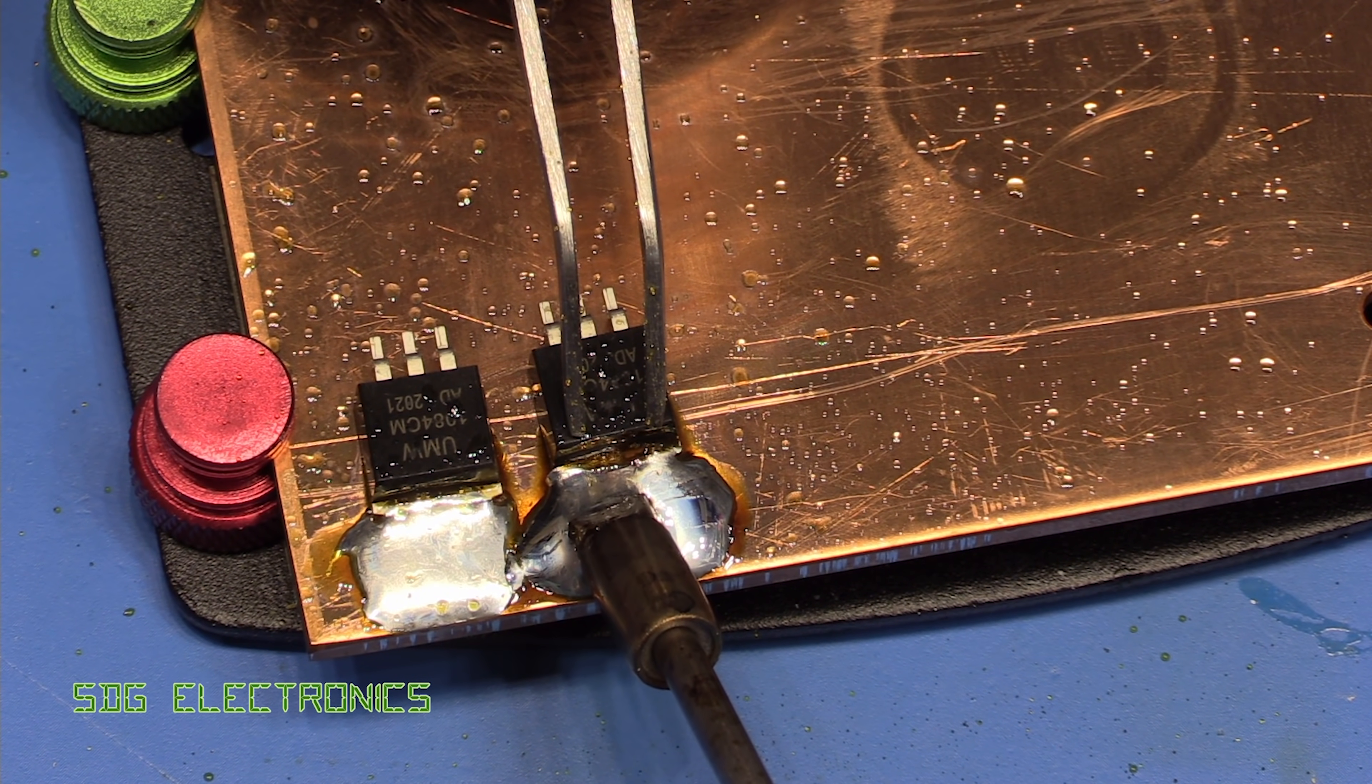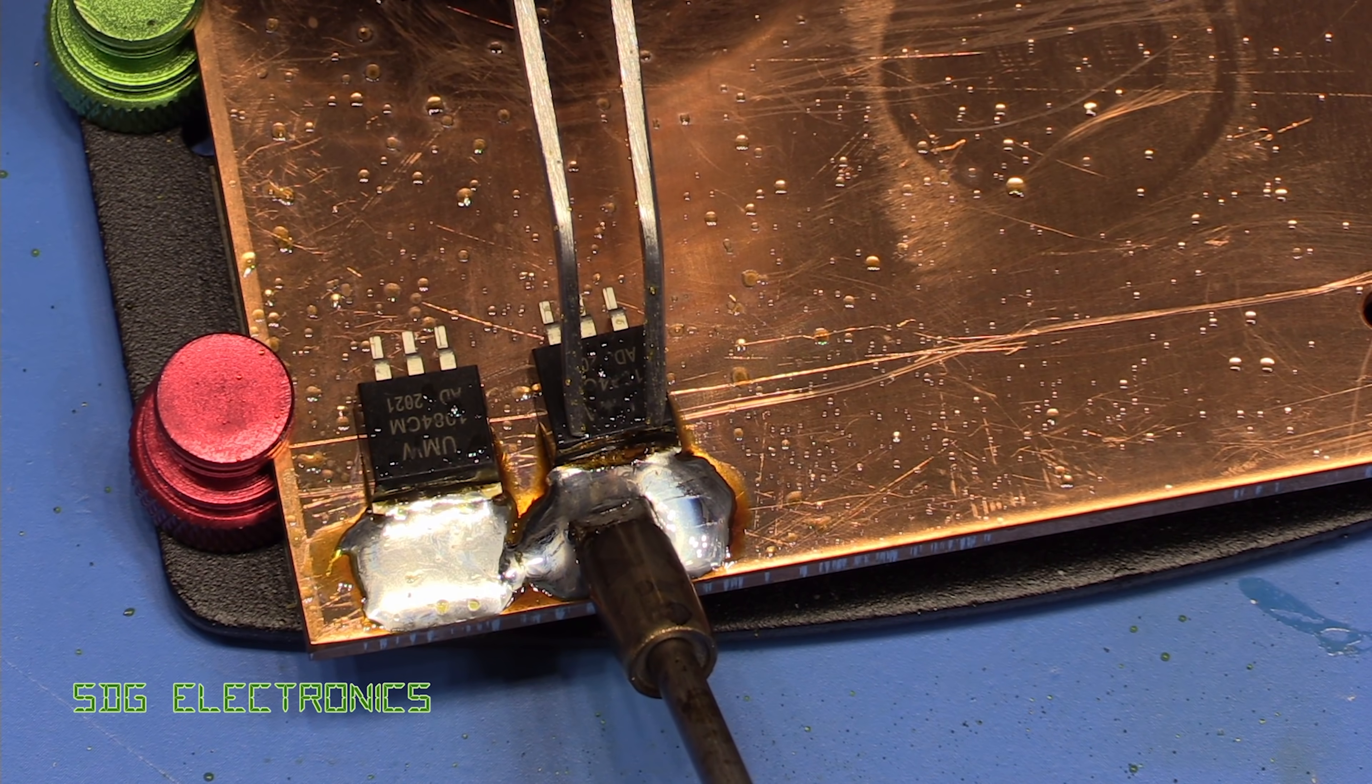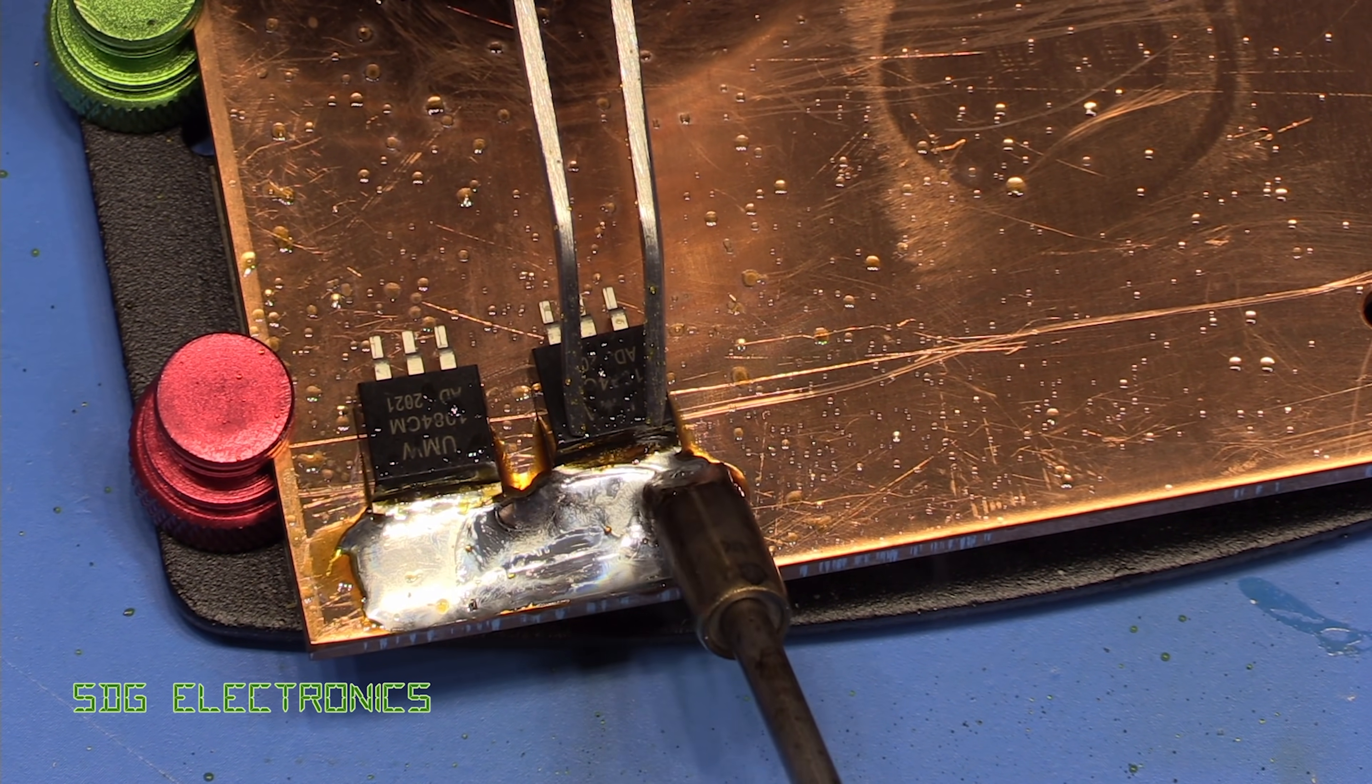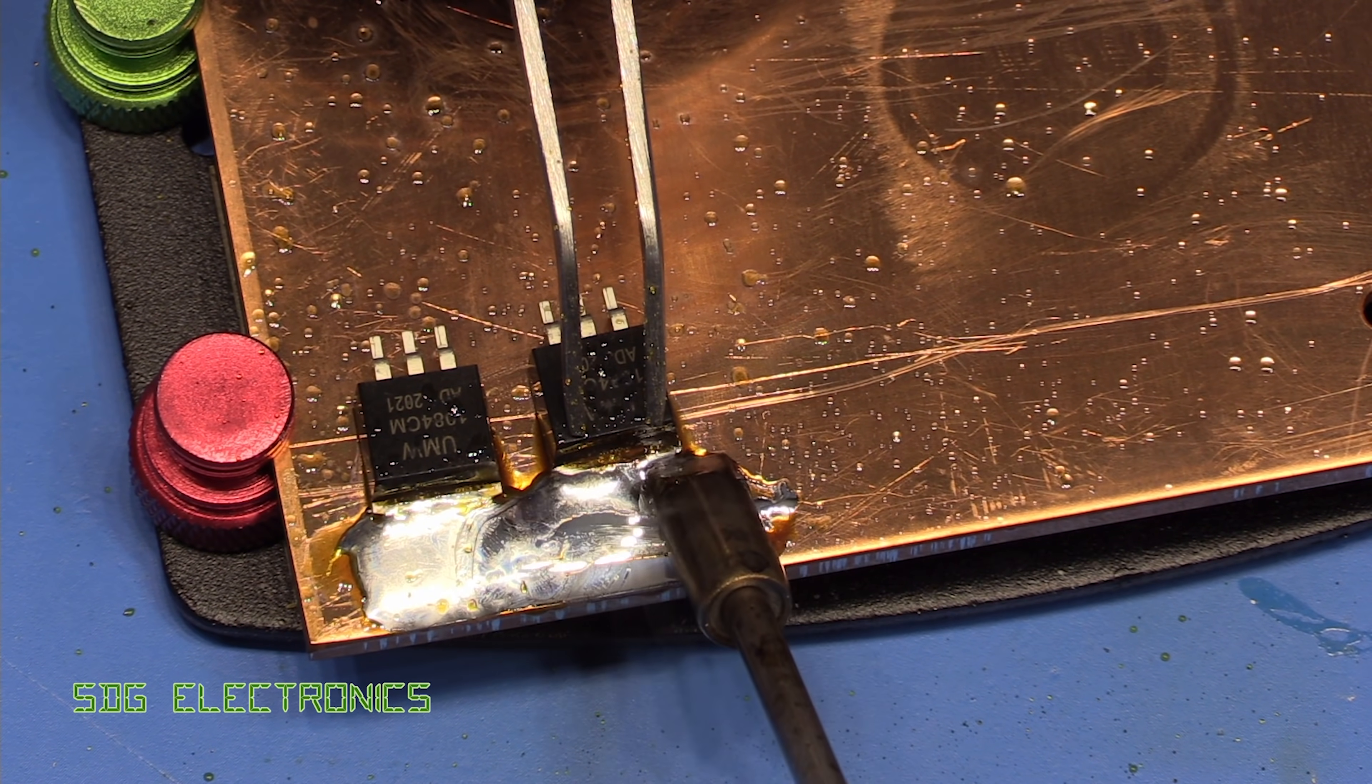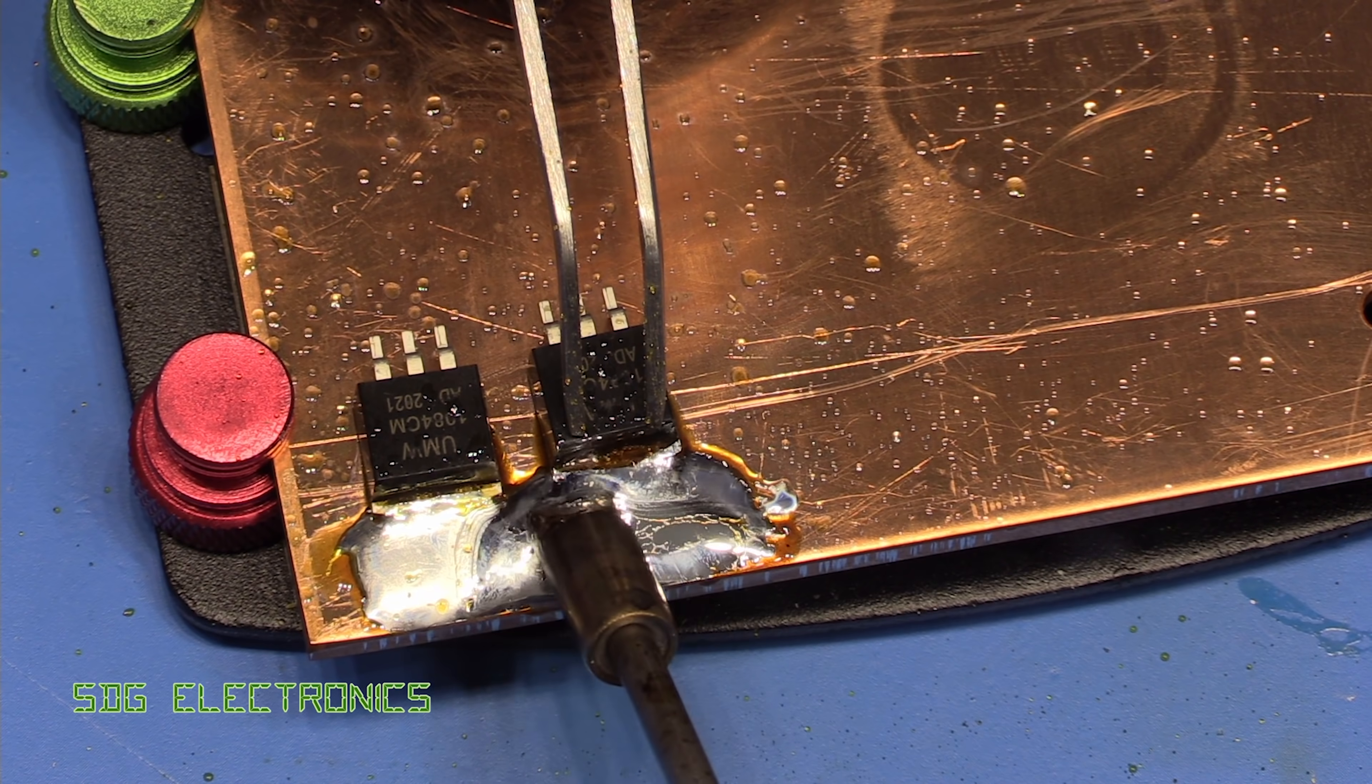You can see already something's starting to happen here now. Yeah, that's all starting to melt. So JBC absolutely no problem with it. The Pace was really struggling. And obviously we saw the Metcal as well doing a really good job soldering onto this piece of copper.